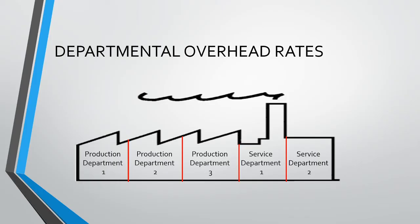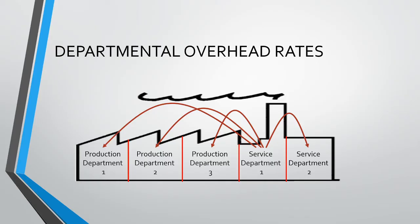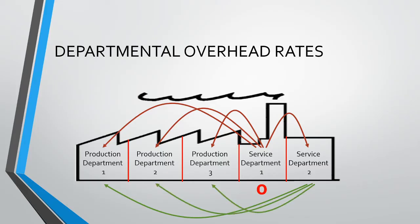We start with our first service department and allocate it out based on the other department's usage. We allocate some cost to production departments one, two, and three, and because service department two also uses service department one, we allocate some overheads to service department two. This leaves service department one with zero overheads. We then allocate service department two to production departments one, two, and three — but service department one also uses service department two, so we allocate some overheads back to service department one.